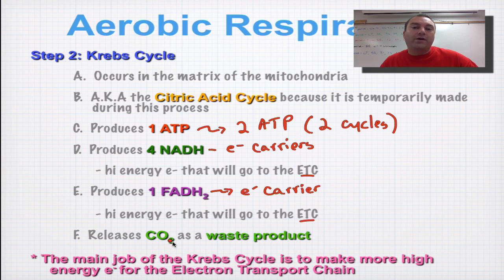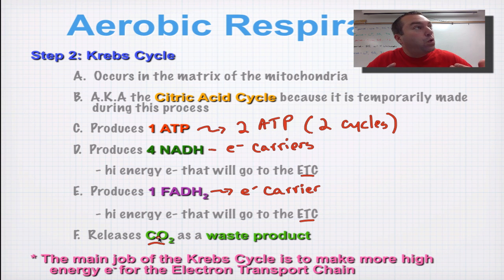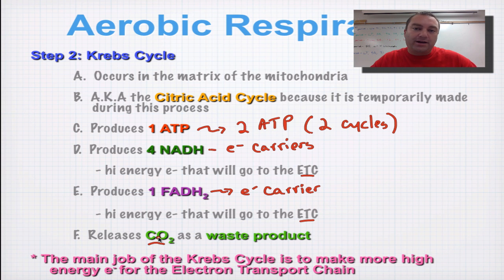You're also going to produce one of the waste products of cellular respiration at this step: carbon dioxide. All the carbon dioxide that we breathe out — every single bit of it — was produced inside your mitochondria by the Krebs cycle.